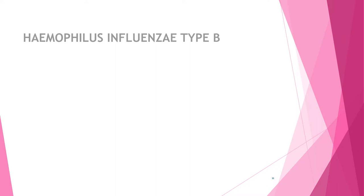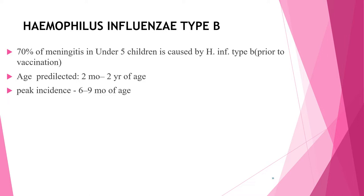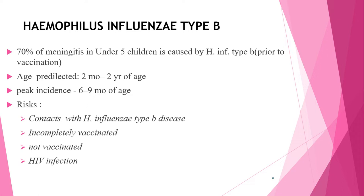Haemophilus influenzae type b was a leading cause of bacterial meningitis. Before universal Hib vaccination, approximately 70% of bacterial meningitis cases in the first five years of life were caused by this pathogen. Invasive infection occurred primarily between two months and two years of age, with peak incidence at six to nine months, and 50% of cases in the first year. Risk is markedly increased among family or daycare contacts of Hib patients.